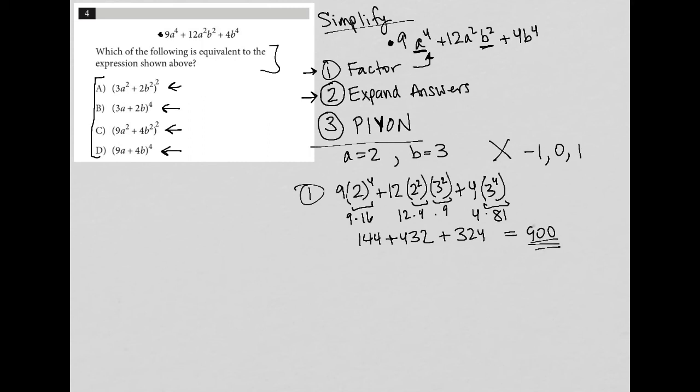So then I go to my answer choices, and I plug in the exact same A and B. So let's try answer choice A. So with answer choice A, I'd have 3. And then instead of A squared, again, it becomes 2 squared plus 2 times, instead of B squared, it becomes 3 squared.